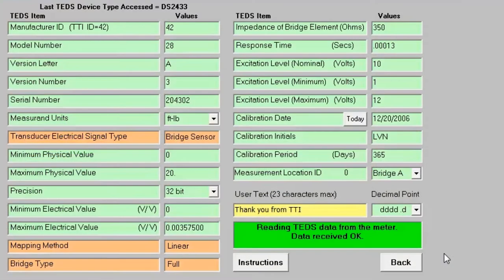TEDS, or a Transducer Electronic Data Sheet, is a set of electronic data in a standardized format defined within the IEEE 1451.4 standard, template 33.